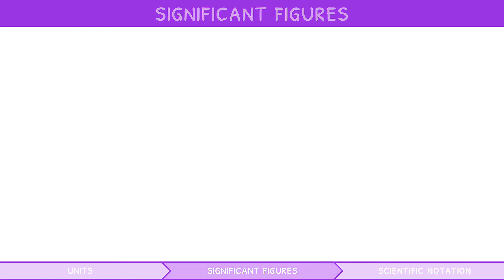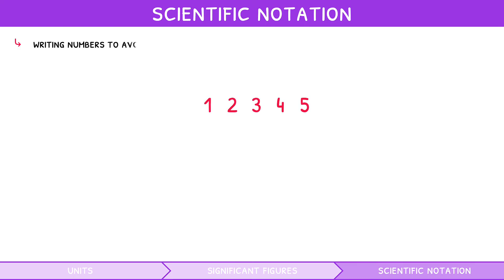Earlier in this video, we mentioned scientific notation. But what is it? Well, it is a way of writing numbers to avoid ambiguity in decimal places, as we just saw. It works by taking the decimal place and moving it, so the number lies between 1 and 9.99. This number is then multiplied by 10 to a power that equals the number of decimal places we move to the left.